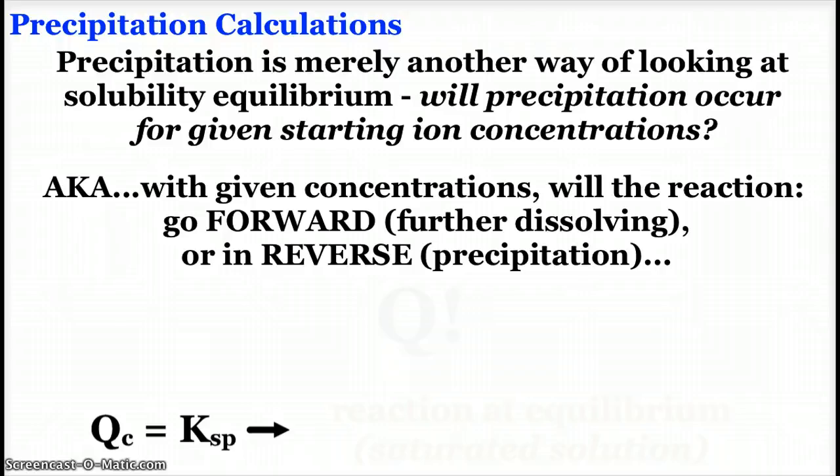Will precipitation occur for starting ion concentrations? So in other words, with given concentrations, will the reaction, the dissolving of the solute, will it go forward, meaning further dissolving, or will it go in the reverse direction, meaning precipitation?